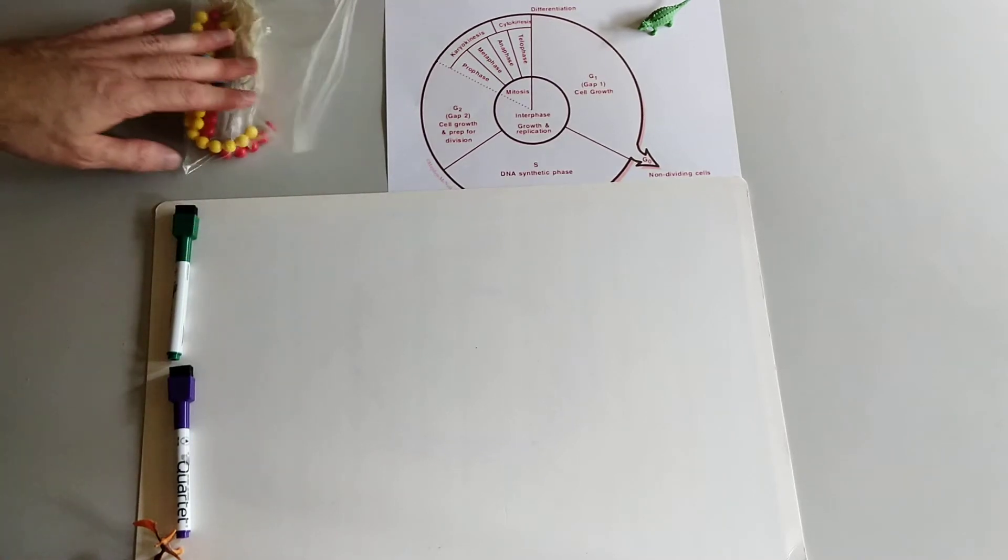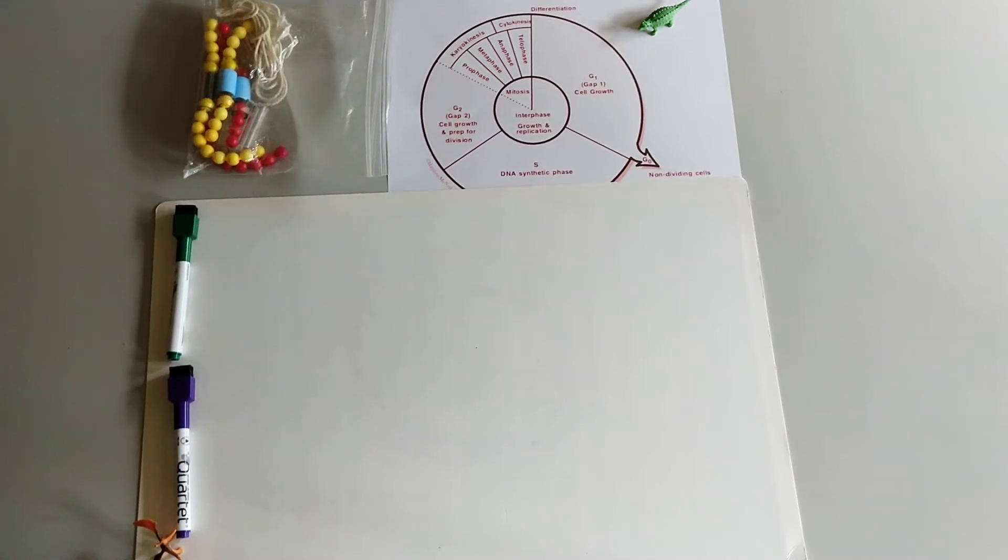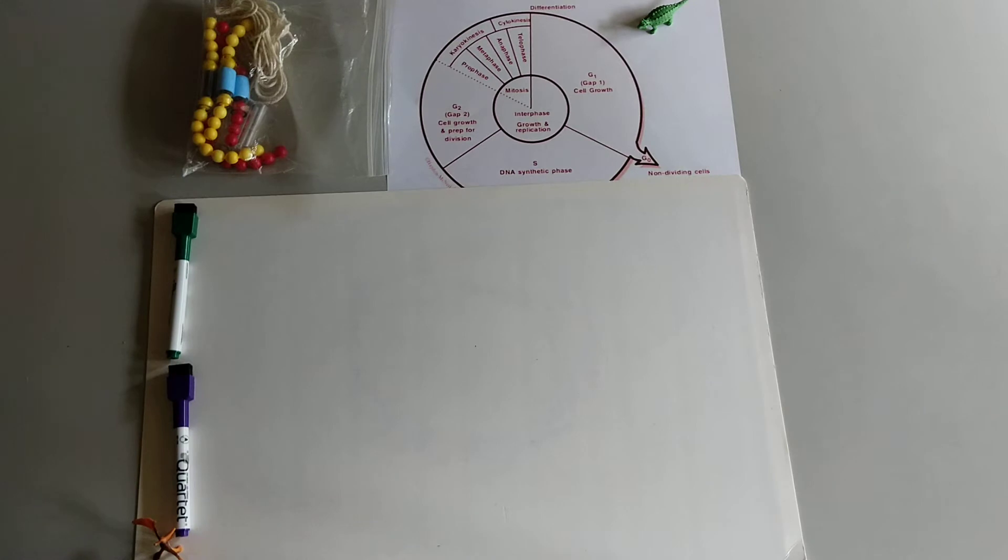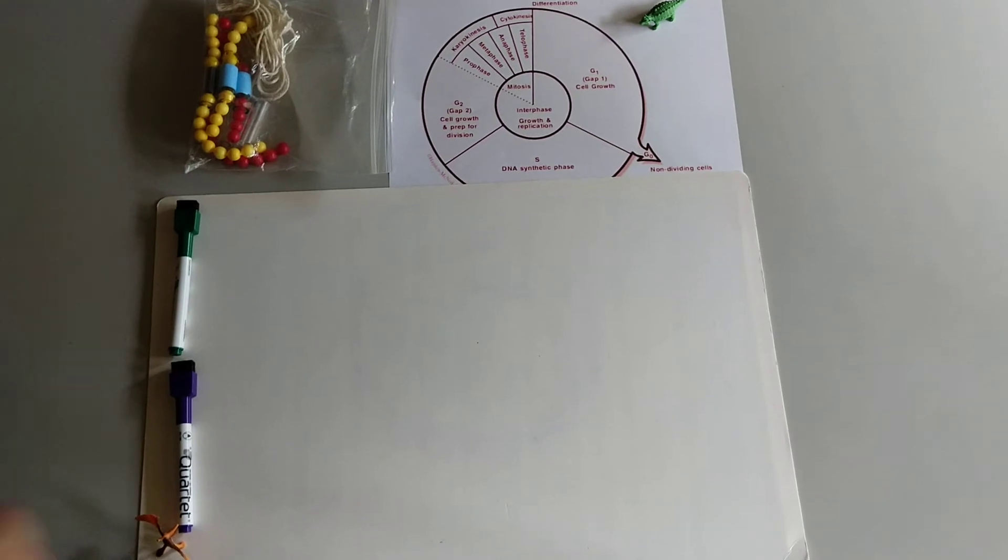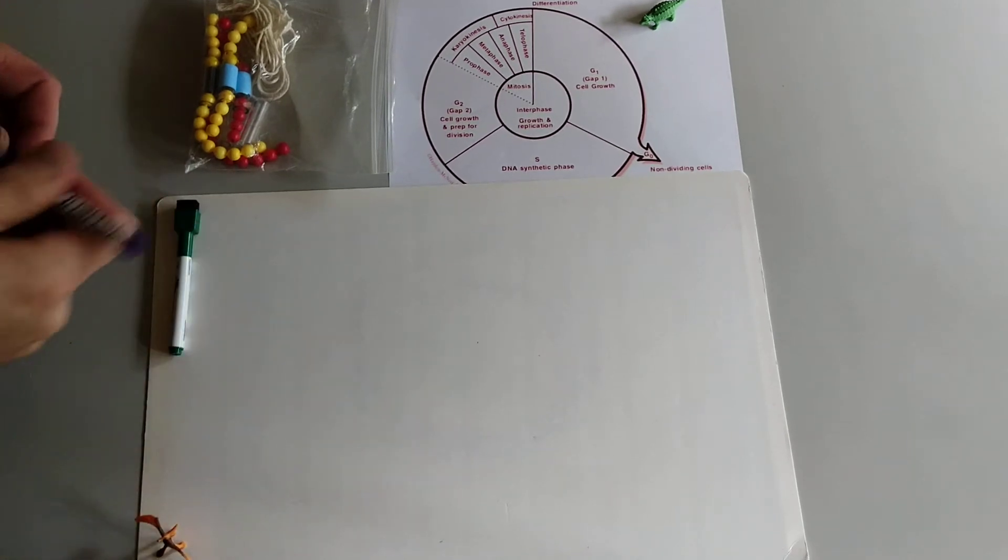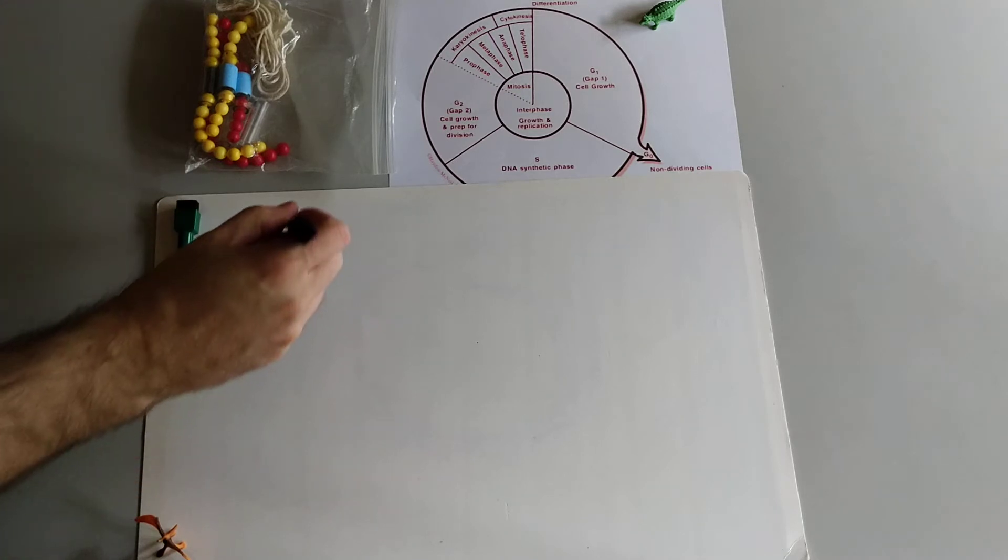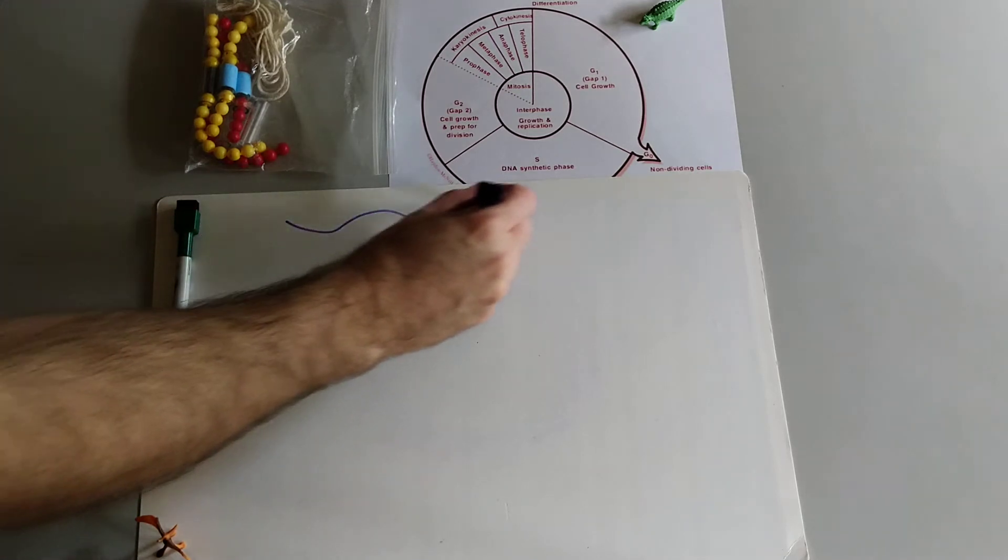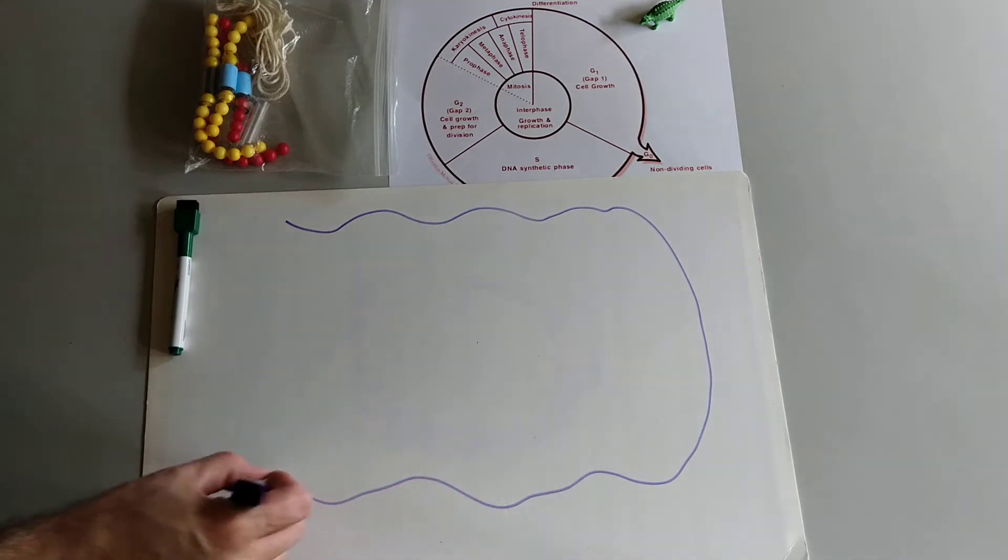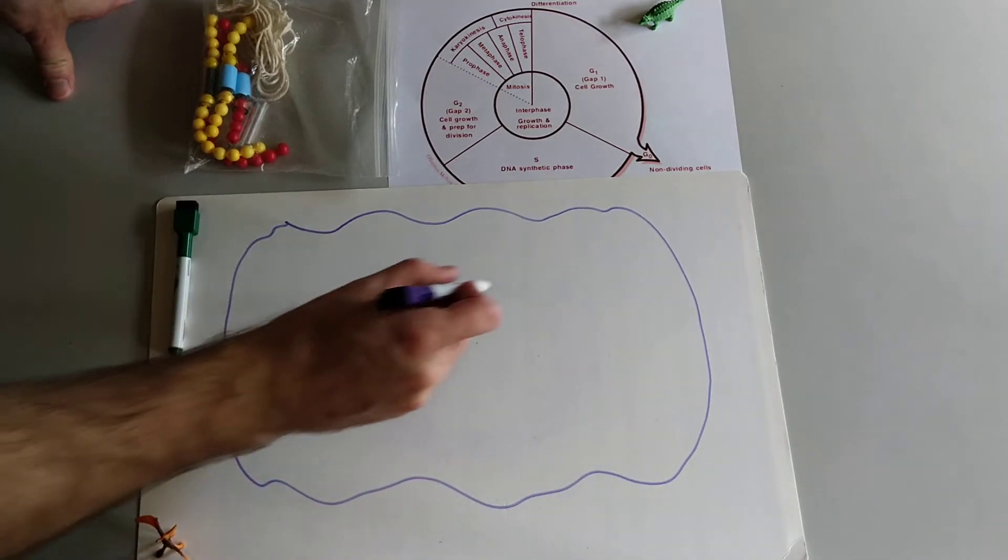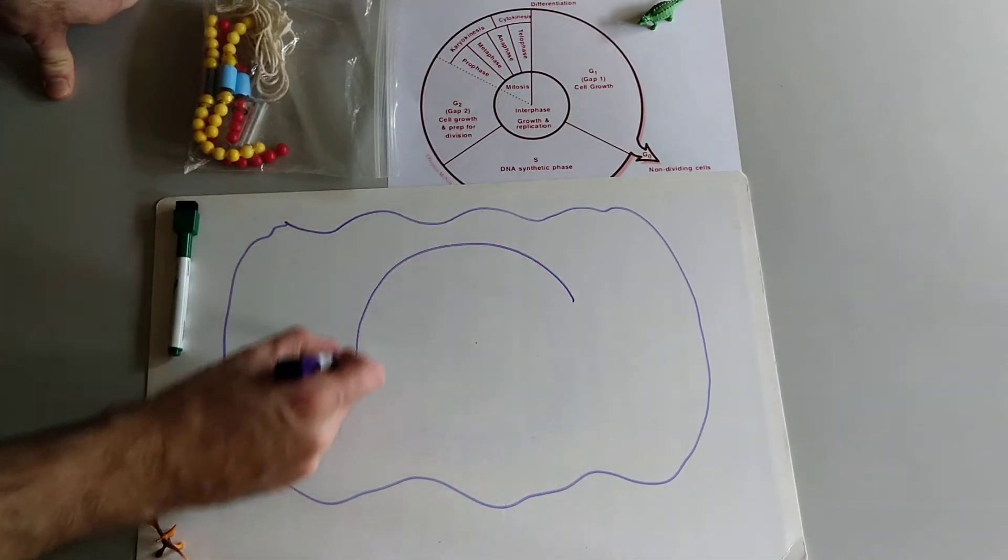So before we begin we're going to set up our cell and this is a eukaryotic cell that is about to divide or going to divide eventually. So it needs a plasma membrane and also a nuclear membrane.